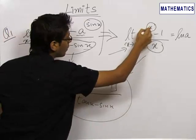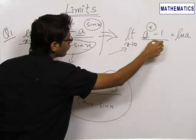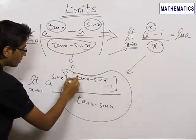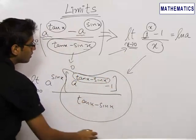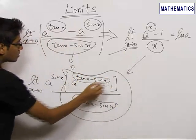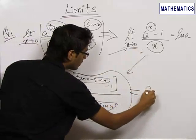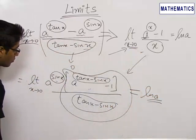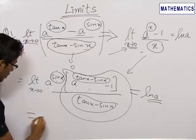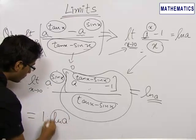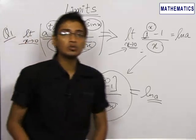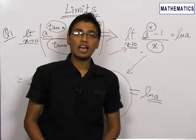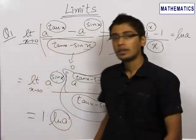Here we had a raised to a quantity tending to 0, minus 1, upon a quantity tending to 0 as x tends to 0 — and here we have the same structure. So this is analogous to the formula and hence equals ln a. And very obviously, if x tends to 0 then sin x also tends to 0, so a^0 equals 1. So the answer we get is 1 times ln a, which equals ln a. In this problem we used the formula limit x tending to 0 of a^x minus 1 upon x equals ln a to get the final answer as ln a.